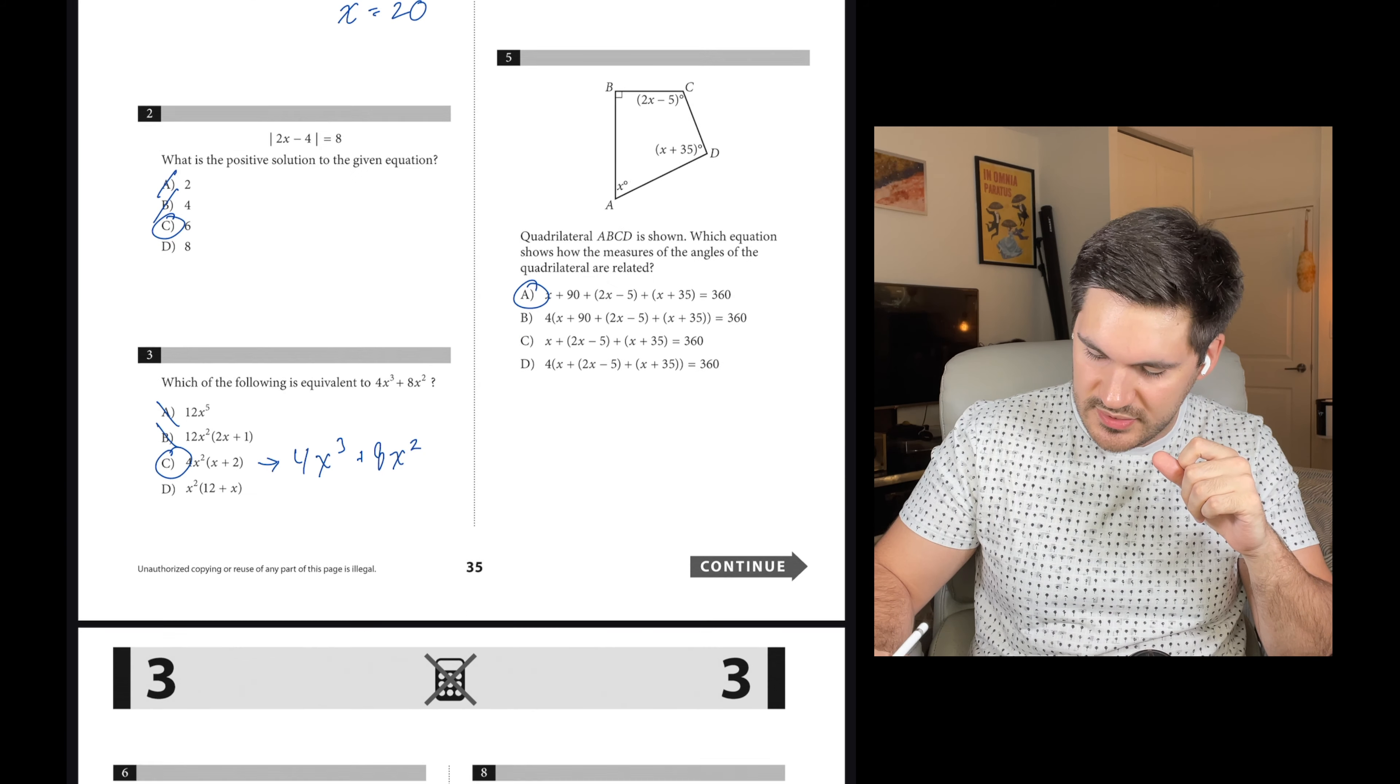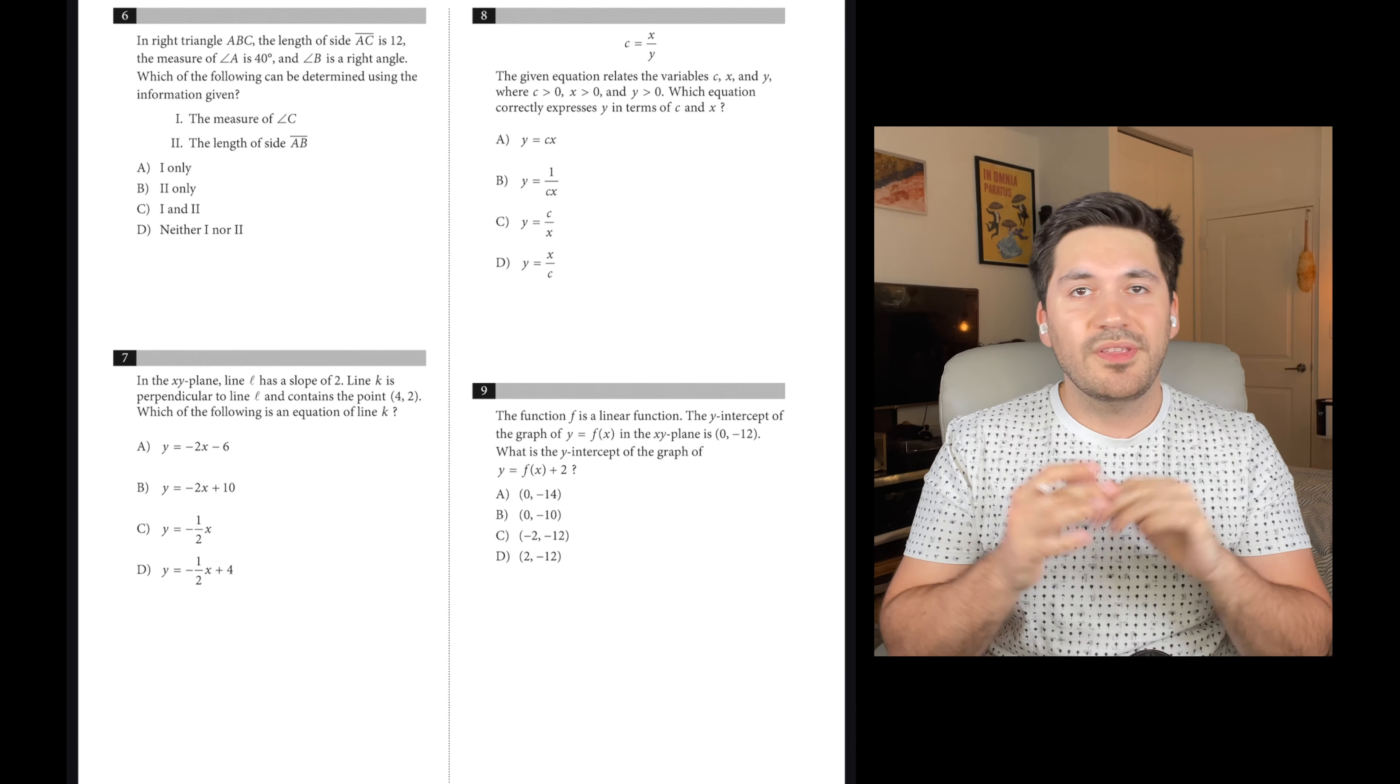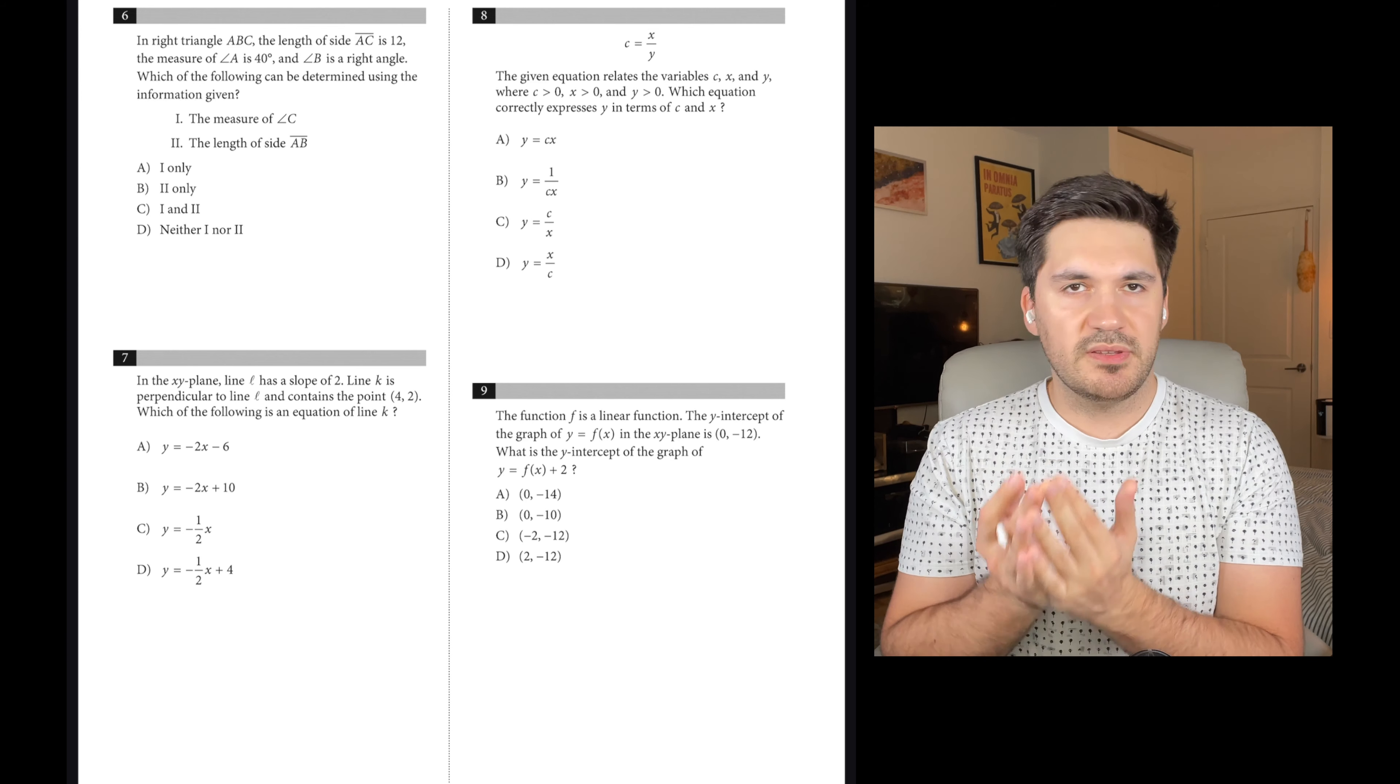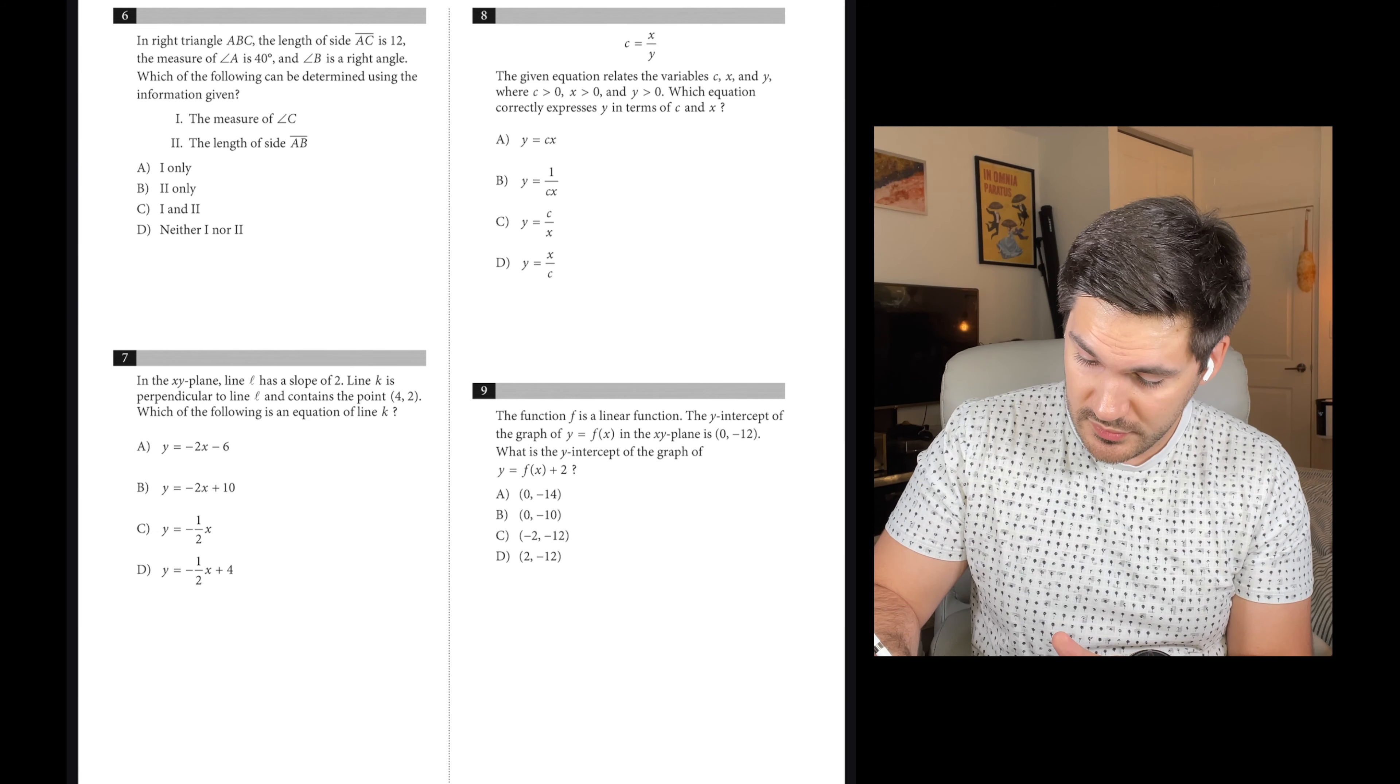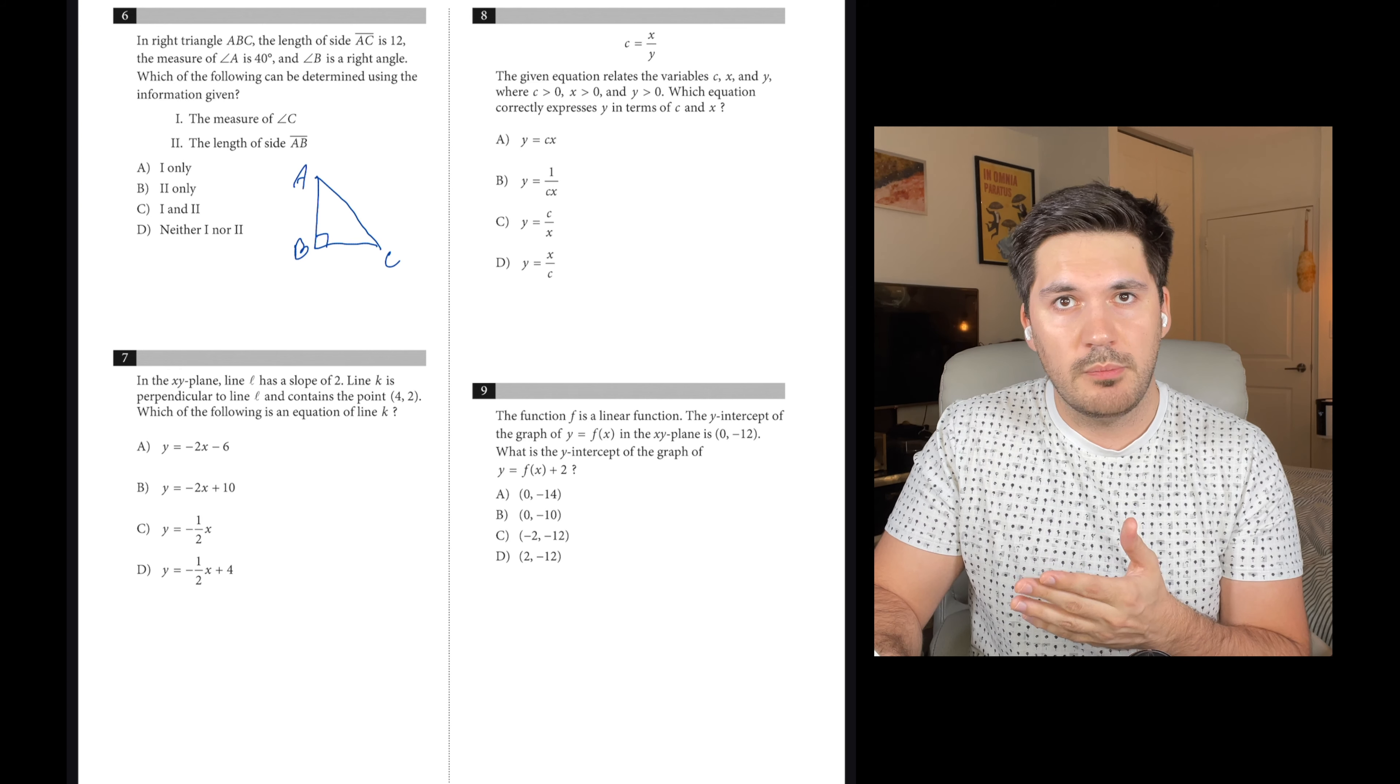Number six, in right triangle ABC, the length of side AC is 12, the measure of angle A is 40, B is a right angle. Which of the following can be determined using the information given? Whenever they give us geometric information, you are going to draw out this shape every single time. Even if you can potentially do a problem in your head, you can still make a stupid mistake. So we're going to draw out this triangle.